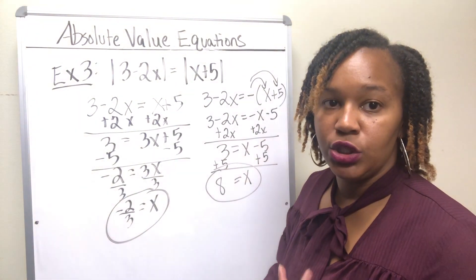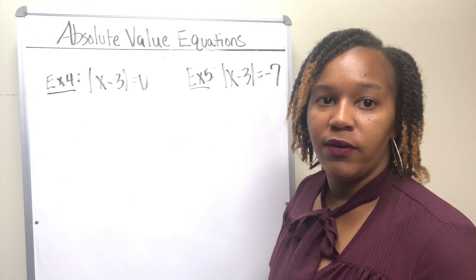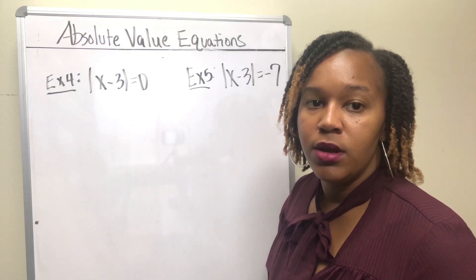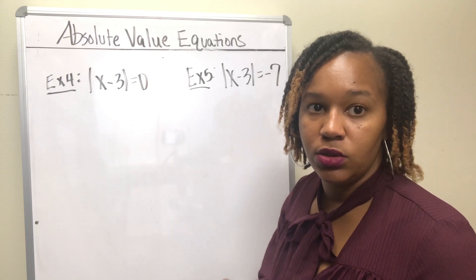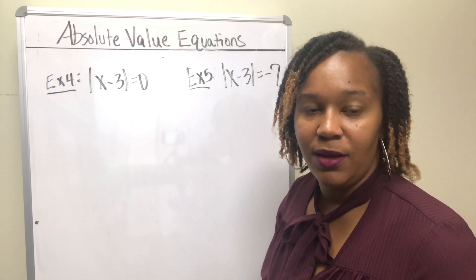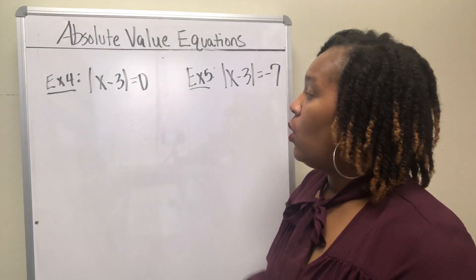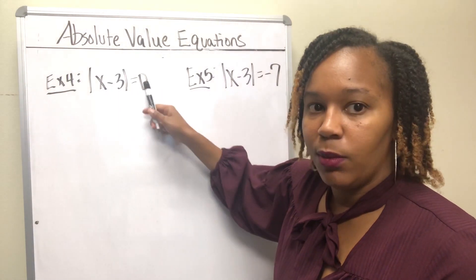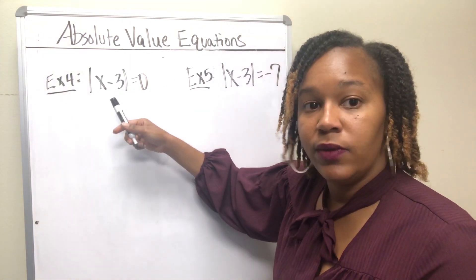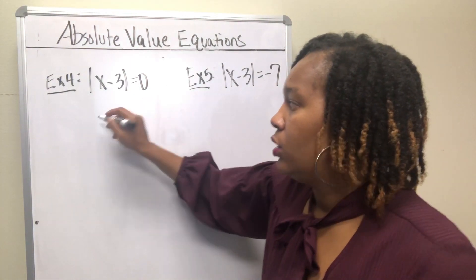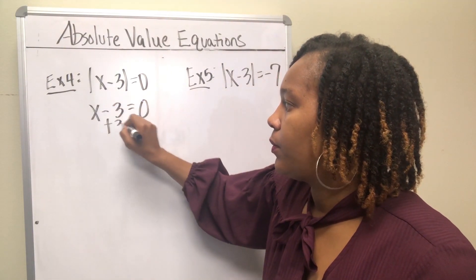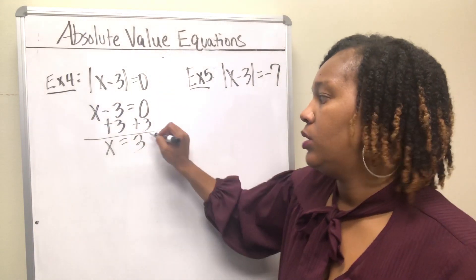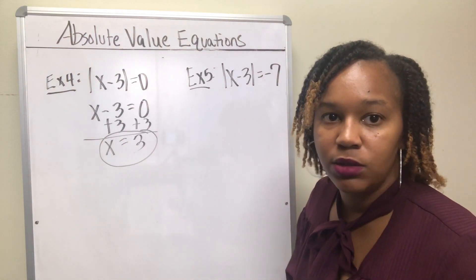There are two special cases when solving absolute value equations. The first is when an absolute value equals 0. In all other cases you get two solutions, but there's only one number that can be inside the absolute value bars to make it equal 0 — and that's 0. So you take x minus 3, set it equal to 0, and add 3 to both sides. This gives one solution: x equals 3.